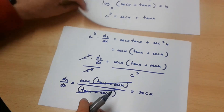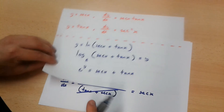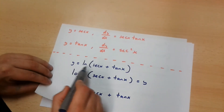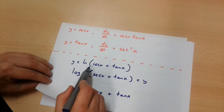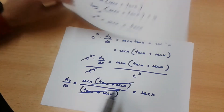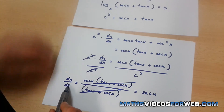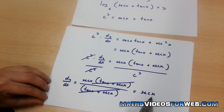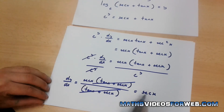So we know that when y equals ln of sec x plus tan x, dy over dx is equal to sec x.